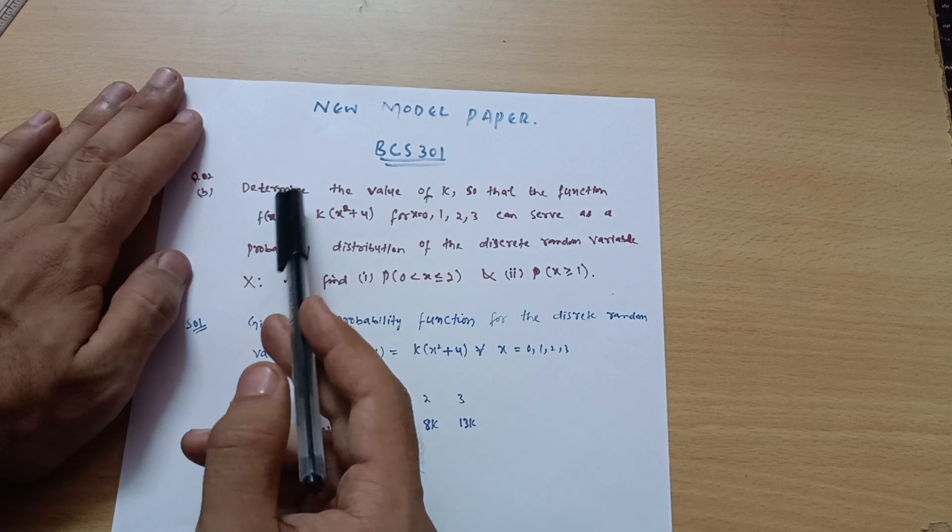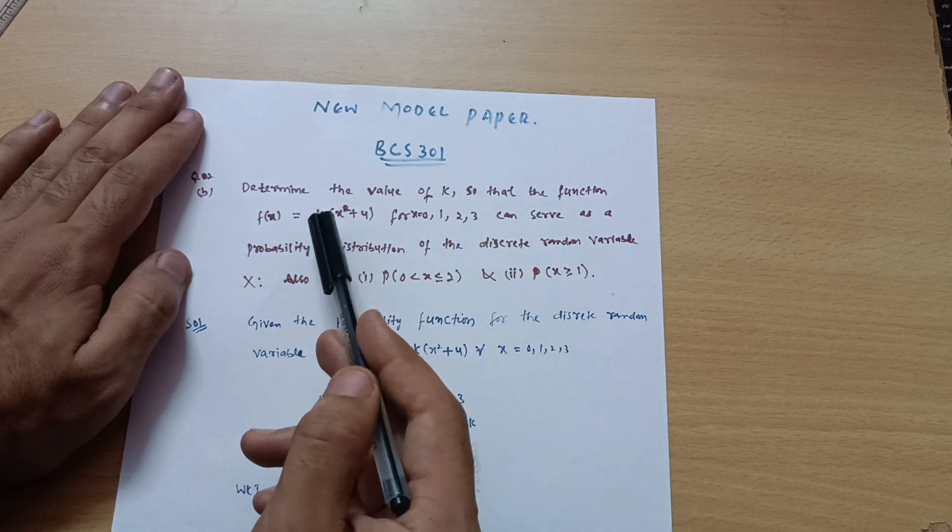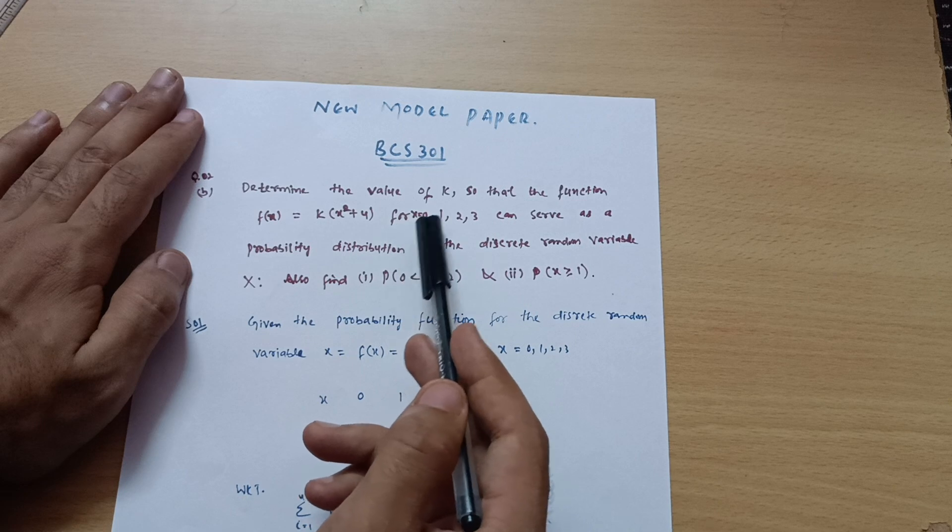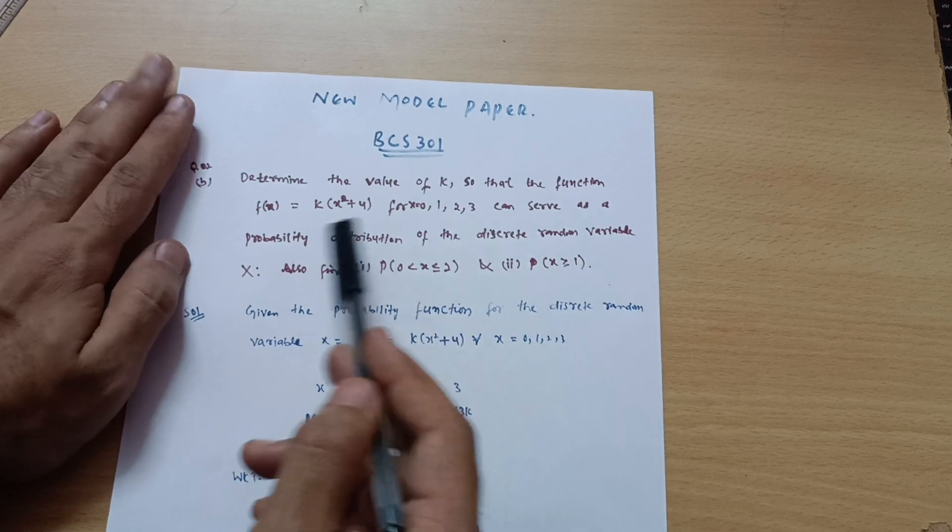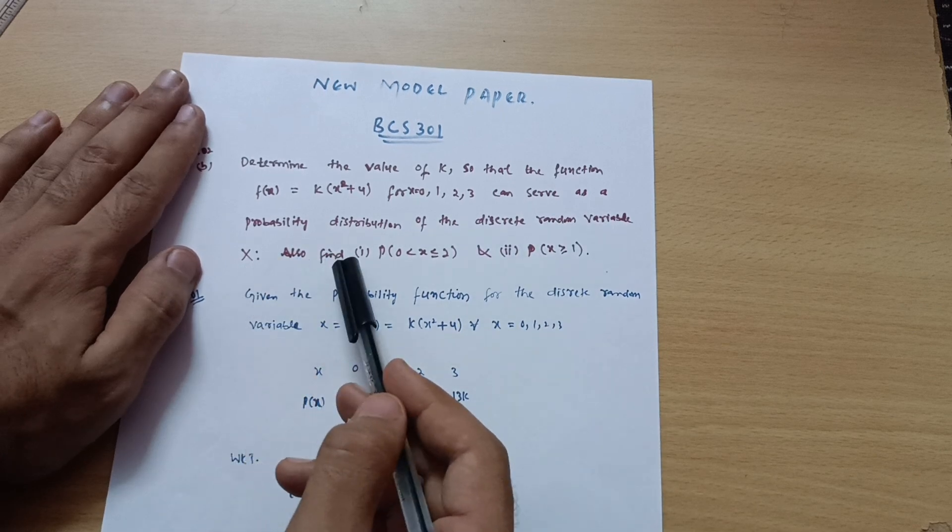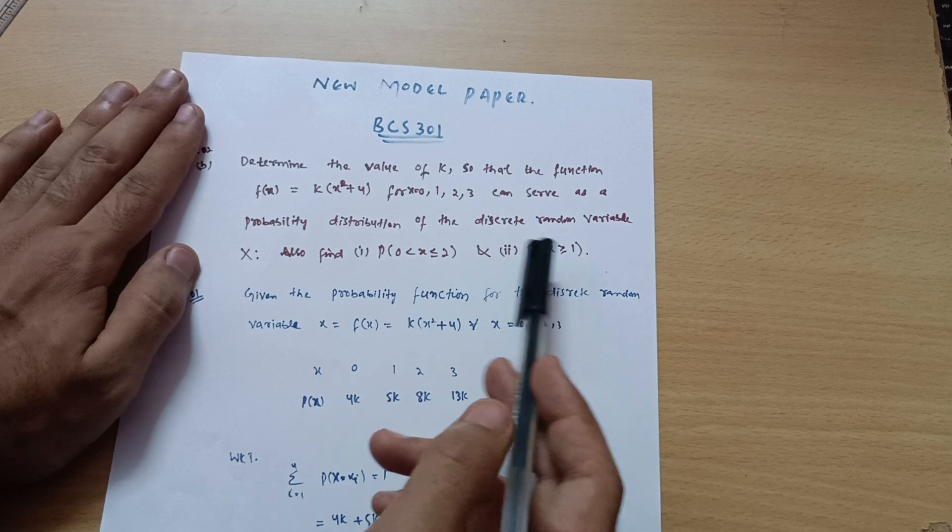Today I will be explaining the question: determine the value of k so that the function f(x) = k(x² + 4) for x = 0, 1, 2, 3 can serve as a probability distribution of the discrete random variable x. Also find probability of 0 < x ≤ 2 and probability of x ≥ 1.